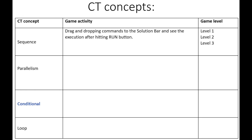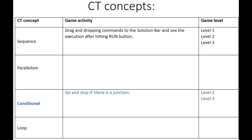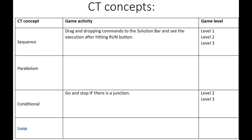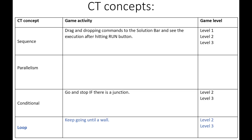Two computational thinking concepts are introduced from level 2. First, conditional — the ability to make decisions based on certain conditions. In this game, the condition is to go and stop if there is a junction. Second, loop — a mechanism for running the same sequence multiple times. In this case, it means the mouse keeps going until it hits a wall.